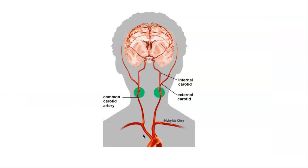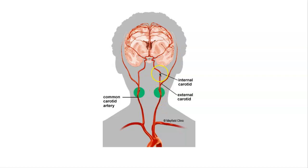A quick review on where the internal carotids come from: on the right side is your brachiocephalic trunk, then the right common carotid artery, which bifurcates into the external carotid and the internal carotid. On the left, the common carotid comes straight off of the aortic arch. The internal carotids travel up and enter the carotid canal of the skull, coming through a little canal and entering around the area lateral to the sella turcica.